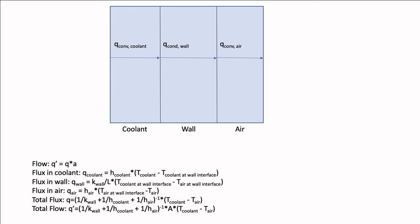For the convective heat transfer through the coolant with heat transfer coefficient H coolant, we find that the convective heat flux Q equals H coolant times the difference between the temperature of the coolant and the temperature of the coolant at the wall interface. The conductive heat transfer through the wall with length L and thermal conductivity K wall is calculated by Q equals K wall times the difference between the temperature of the coolant at the wall interface minus the temperature of the air at the wall interface, divided by L.